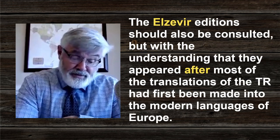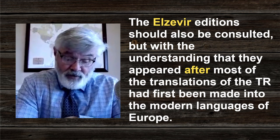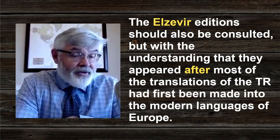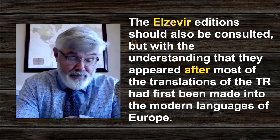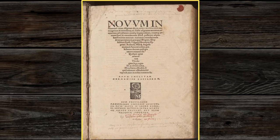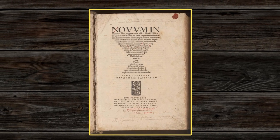The Elsevier editions should be consulted, but with the understanding that they appeared after most of the translations of the TR had been made into the modern languages of Europe. I would draw a distinction between the foundational work of Erasmus's early editions and what I've called the mature Protestant editions of the TR. The first two editions of Erasmus — 1516 and 1519 — did not include the Comma Johanneum, 1 John 5:7 and 8.